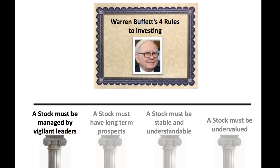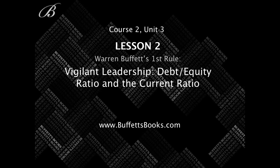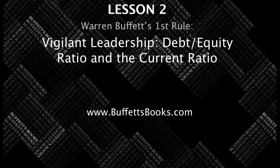If I went a little fast, I strongly encourage you to go back and do some research on the debt to equity ratio and the current ratio on your own. Those are your two tools to understand how much debt a company has and whether it's manageable. This all falls under Warren Buffett's first rule: a stock must be managed by vigilant leaders. Use those tools to your advantage and don't settle for a company with too much debt. This concludes Course 2, Unit 3, Lesson 2. See you in the next lesson where we discuss Warren Buffett's second rule.